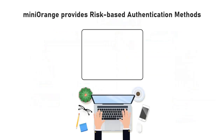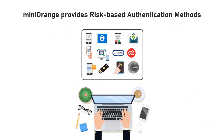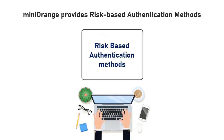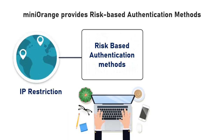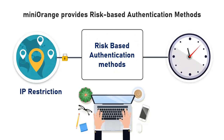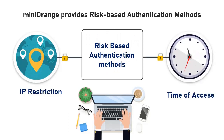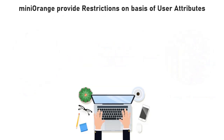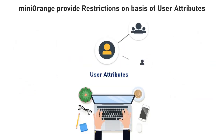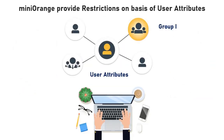In addition to the 15 plus MFA methods, MiniOrange also provides risk-based authentication, which includes authentication based on IP restriction and authentication based on time of access. MiniOrange can also provide restrictions on the basis of user attributes like groups and many more.